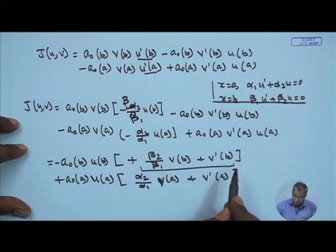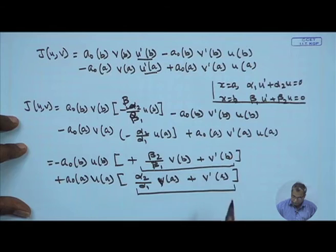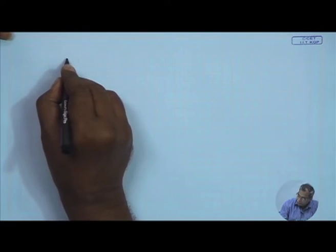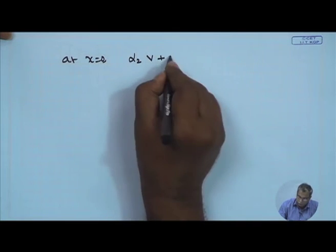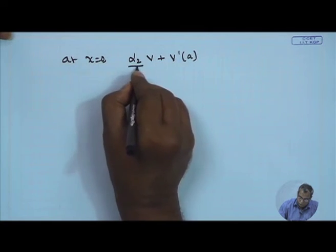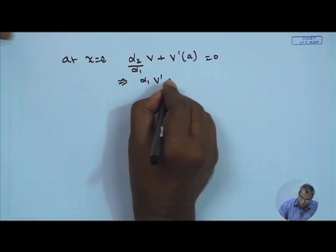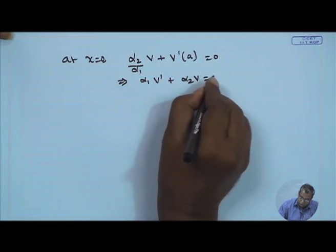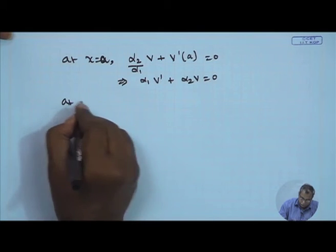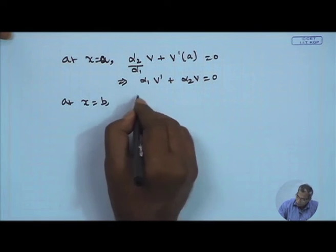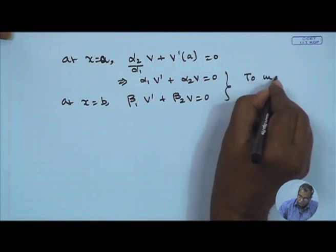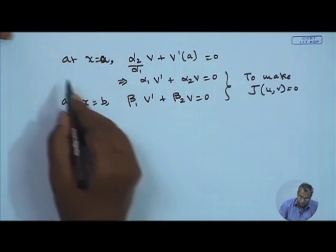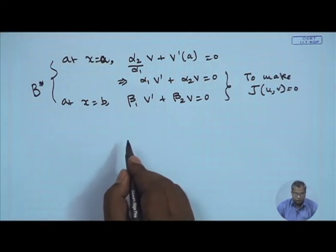For the bilinear concomitant to vanish, we select: at x = a, α₁v' + α₂v = 0, and at x = b, β₁v' + β₂v = 0. These become the boundary conditions of the adjoint problem, B*.